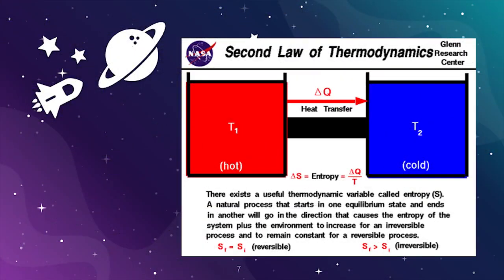The second law of thermodynamics states that the total entropy of an isolated system can never decrease over time. The total entropy of a system and its surroundings can remain constant in ideal cases where the system is in thermodynamic equilibrium.